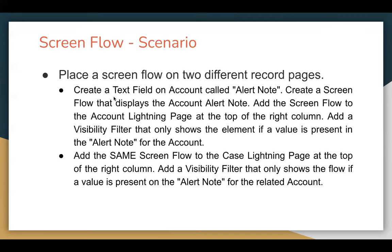The requirement says: create a text field on Account called Alert Note. Then create a ScreenFlow that displays the account alert note. Add the ScreenFlow to the account Lightning page at the top of the right column, just like we do for any ScreenFlow — we place it on the record page. Then add a visibility filter that only shows the element if a value is present in the alert note for the account. So if the alert note field has some value, then only your flow will be visible on the record page, otherwise not.